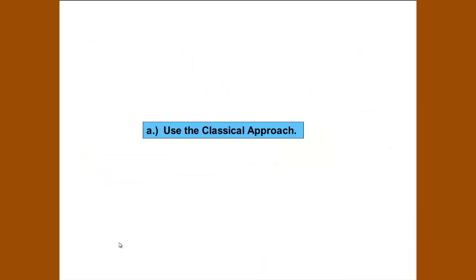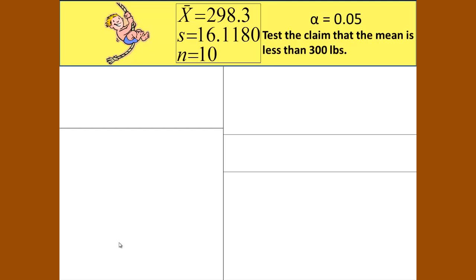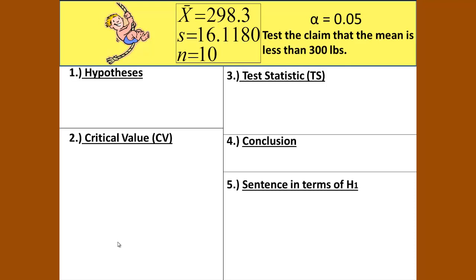For our first part, we will use the classical approach. For Mrs. Borlaug, she has her five boxes for her five-step approach, which is a wonderful structure and helps you to remember to complete all five steps. We have the hypothesis, the critical value, the test statistic, the conclusion, and our sentence in terms of H₁.